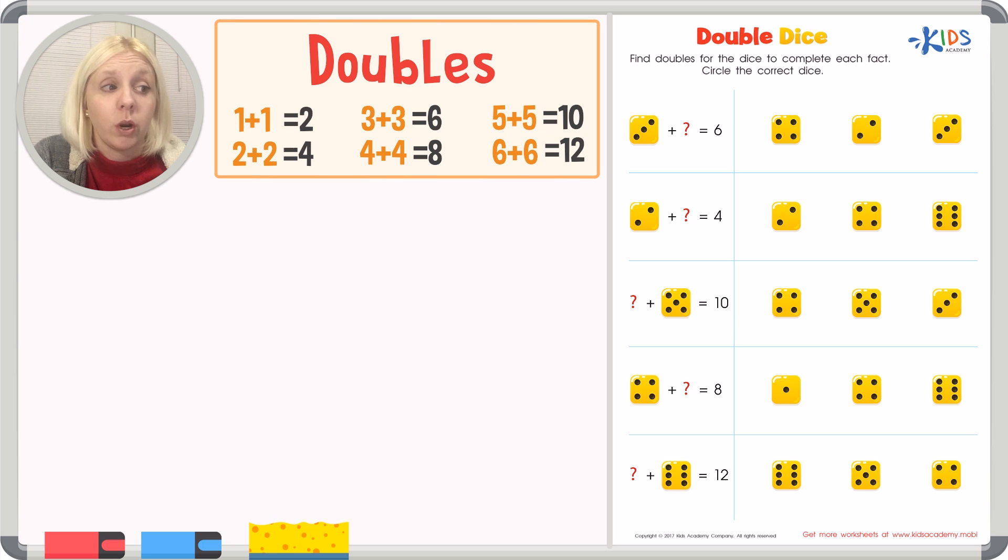You might've heard a song that goes along with it. I'm not going to sing that for you today, but there are lots of great ways to memorize these doubles so that every time we see this, we can automatically know what the answer is. The way we're doing this today, the directions say we've got double dice and it says find doubles for the dice to complete each fact, circle the correct dice.